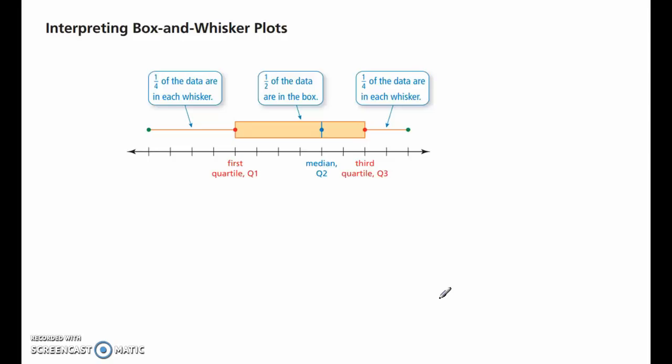All right, interpreting it, you need to know that each segment here is a quarter of all the data, or 25%. So, each whisker contains 25%. Each part of the box contains 25%, so the box in total contains 50% of the data.